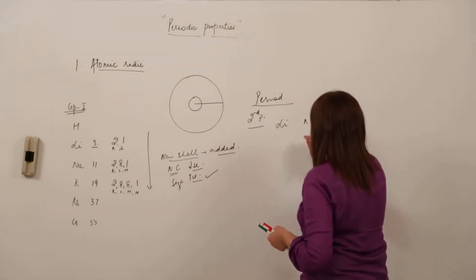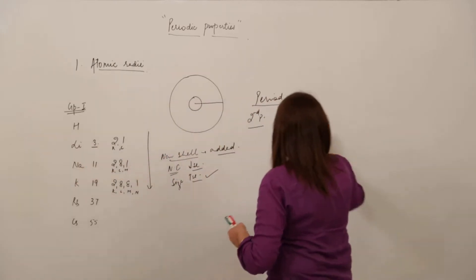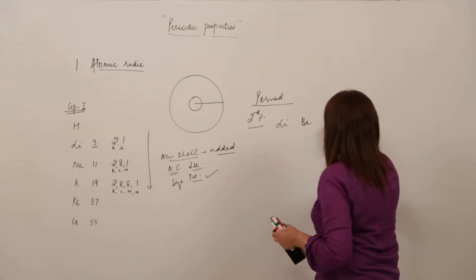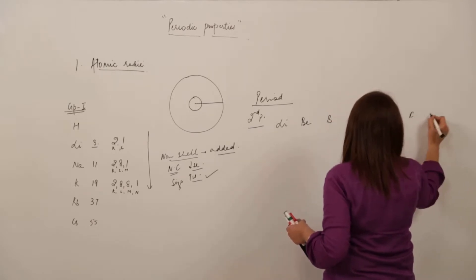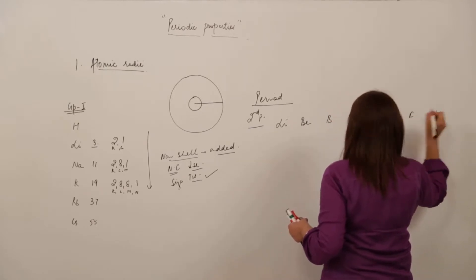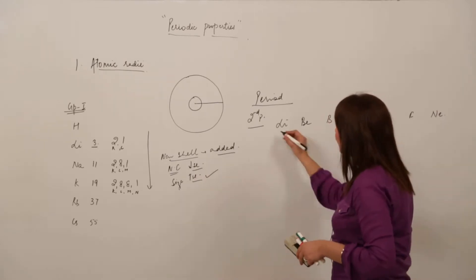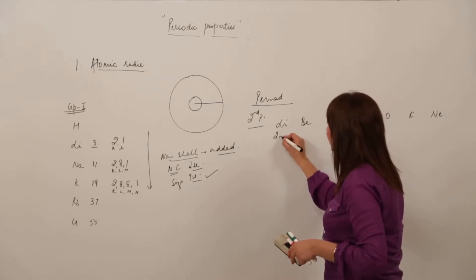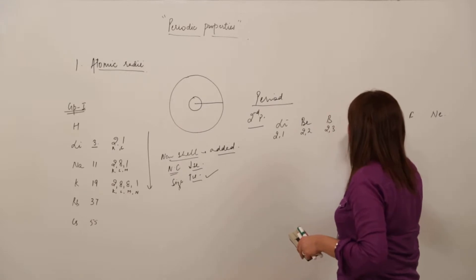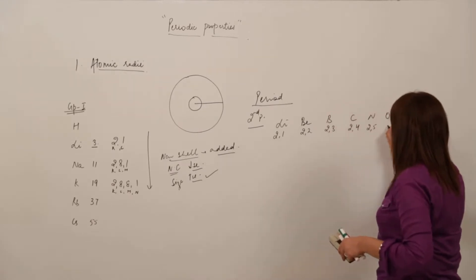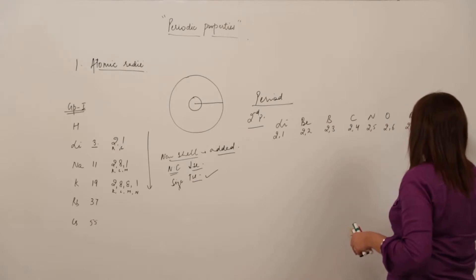Now we are considering a period. Let us take the example of the second period: lithium, beryllium, boron, carbon, nitrogen, oxygen, fluorine, and neon. Writing the electronic configurations: lithium is 2,1; beryllium is 2,2; boron is 2,3; carbon is 2,4; nitrogen is 2,5; oxygen is 2,6; fluorine is 2,7; and neon is 2,8.